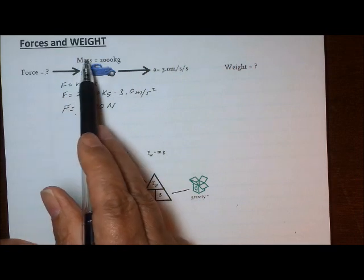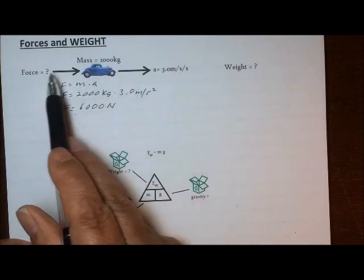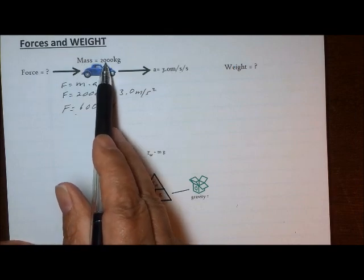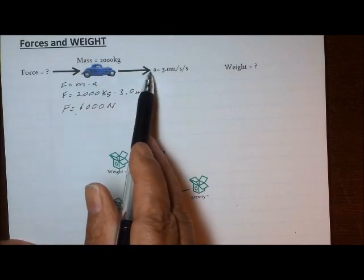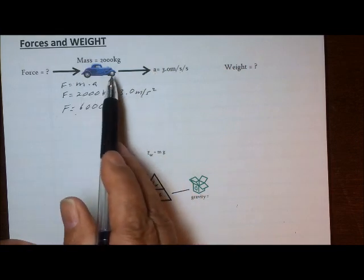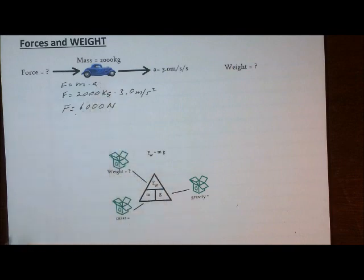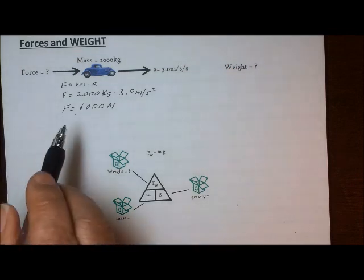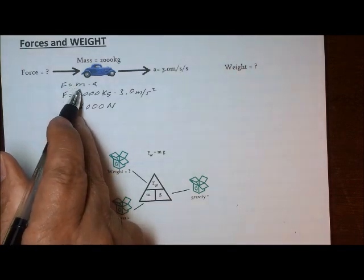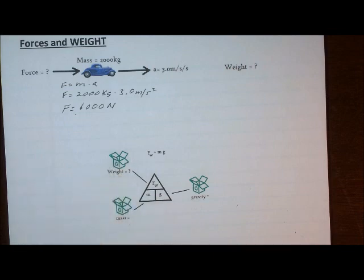Force equals mass times acceleration. A force acting on a mass — in this case 2,000 kilograms — will cause that mass to accelerate in the direction of the force. That's the same type of problem we've worked with using forces before. This time, let's take a look at a different situation: let's figure out what the weight of the car is.